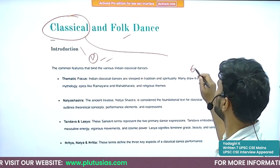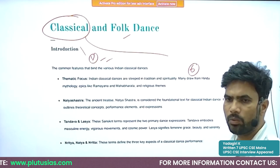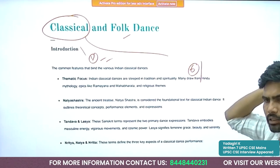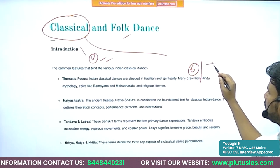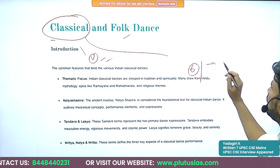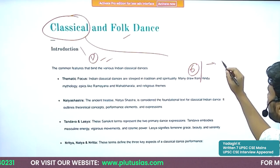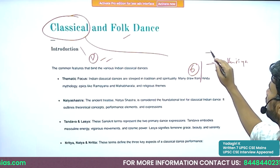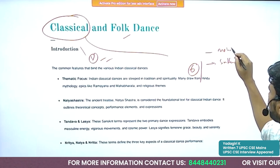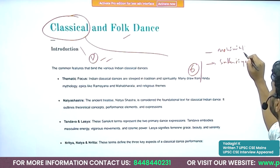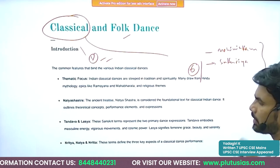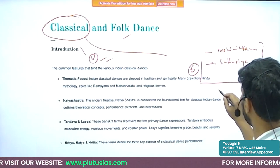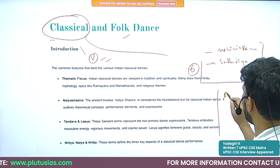For most of the time there were only six classical dances. In the past decade, two more dances have been added: Satariya, which is from Assam, and Mohiniattam. So now we have eight classical dances in total.